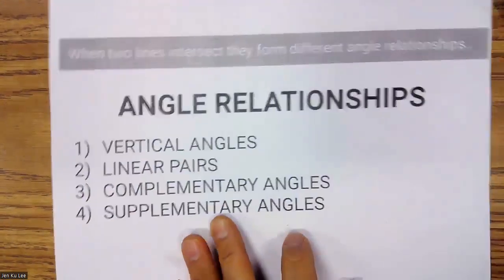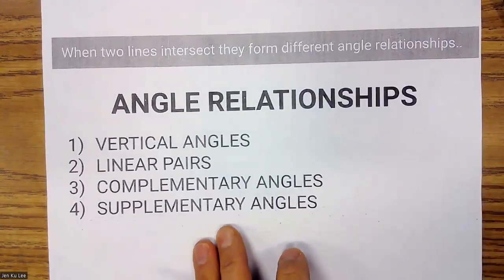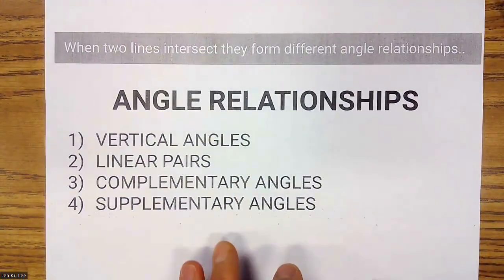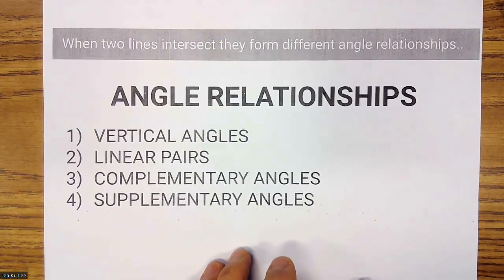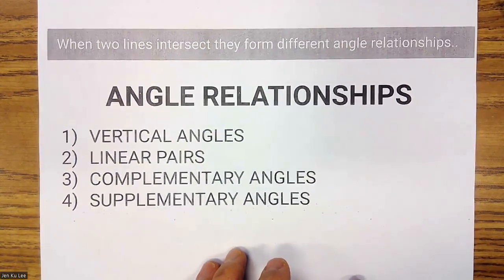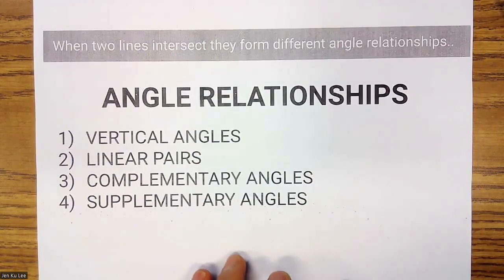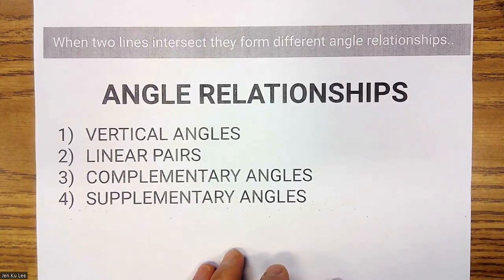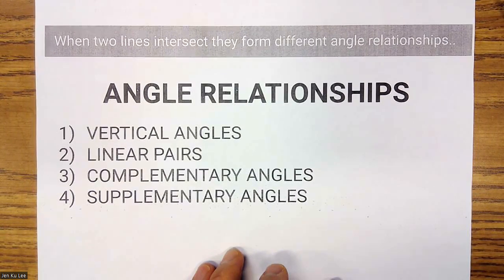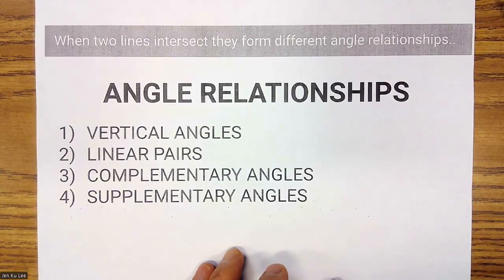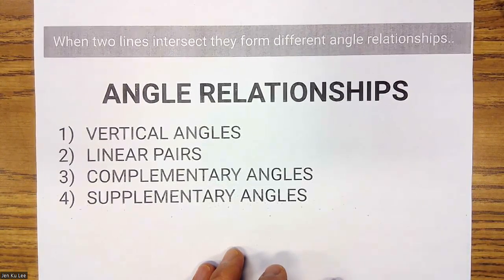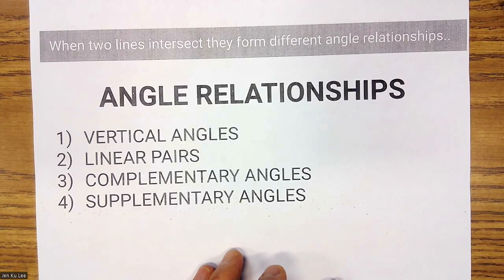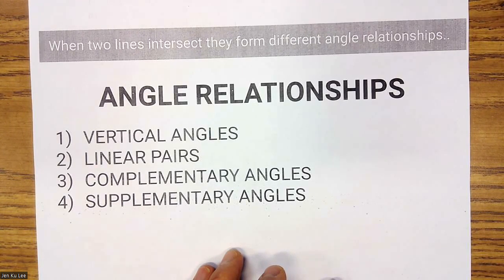When two lines intersect, they form all different types of angle relationships. The four angle relationships we're going to talk about are vertical angles, linear pairs, complementary angles, and supplementary angles.